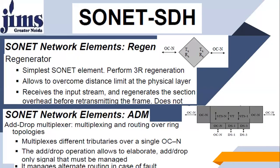Regenerators are the simplest SONET elements used in the optical network. They allow overcoming distance limits at the physical layer, receive the input stream, and regenerate the section overhead before transmitting. Another element used in SONET networks is the ADM — add-and-drop multiplexer — which performs multiplexing and routing over ring topologies. It multiplexes different tributaries over a single optical network, allowing add and drop of only the channels that must be managed, and manages alternate routing in case of fault.